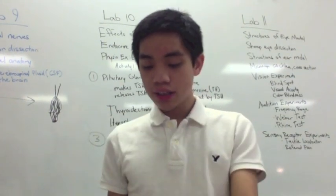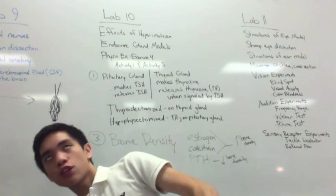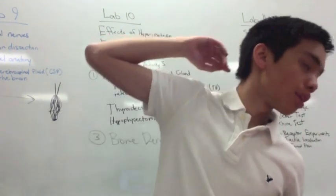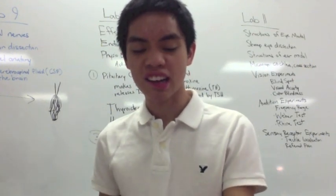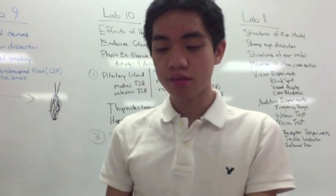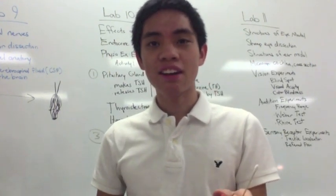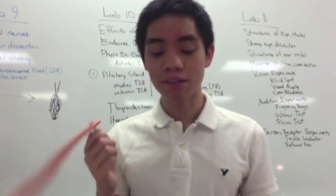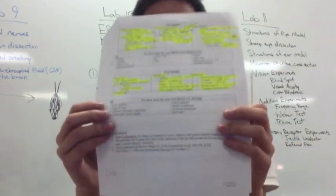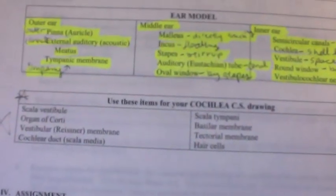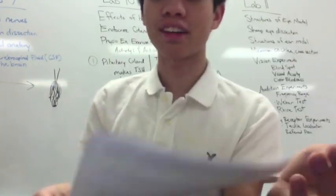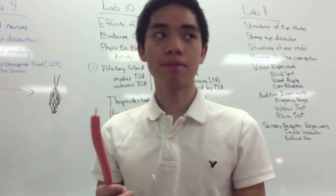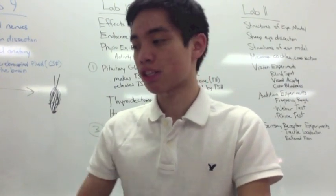Other things you need to know is the cross-section of your cochlea, which you will find in your book — definitely look at that. You do need to know this section about the cross-section of your cochlea, and usually they'll have either an actual microscope slide or just a picture of it.